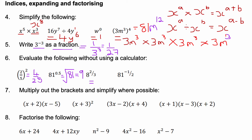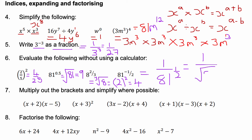8 to the power of 2/3: it's the cube root of 8, then I square my answer. The cube root of 8 is 2, and 2 squared is 4 — so I raise my answer to the power of the numerator. For 81 to the minus half: the negative means the reciprocal, so it flips to 1 over 81 to the power of a half, which is 1 over the square root of 81, equal to one ninth.